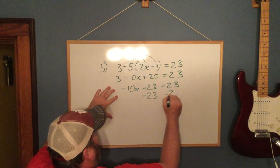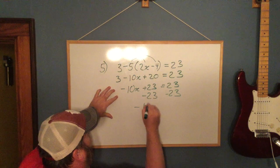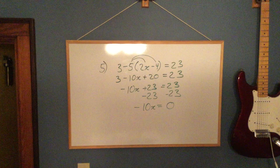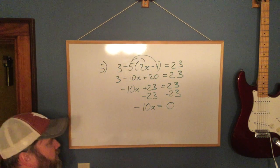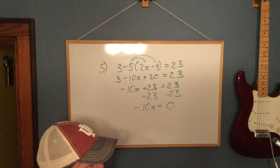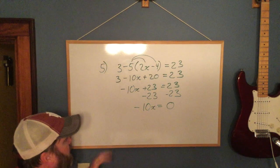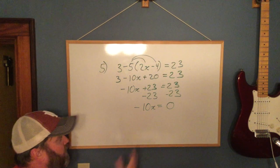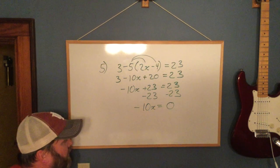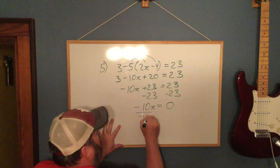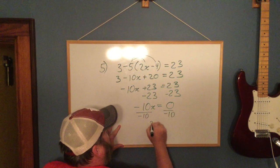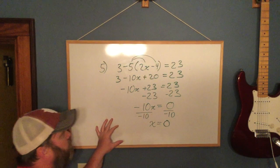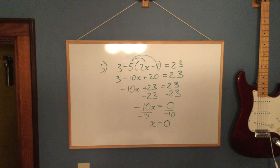Subtract 23. Negative 10x equals 0. And a lot of times people get stuck here or they give me some weird answer, because for whatever reason when 0 comes up, people overcomplicate it. If that said 100, you would just go ahead and divide by negative 10. Well, 0 is a number just like 100 is, so you do the same thing. You would just go ahead and divide by negative 10, and then 0 divided by anything is 0. So 0 is our solution.